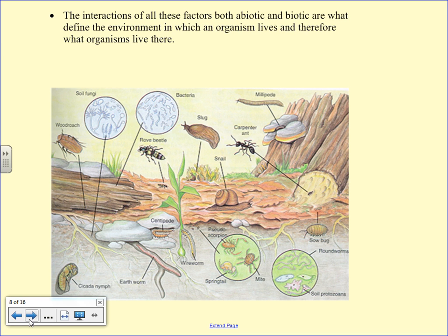Biotic factors — the interactions of all those abiotic factors along with the organisms that live there — are what make an environment what it is. Organisms in the soil like worms and bugs cultivate and turn the soil; decomposers break down dead material and make organic material for plants to grow. It all has to work together — it's all of them working together.